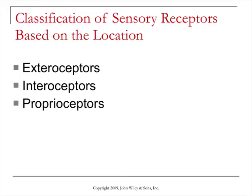Proprioceptors are receptors that are found in the muscles and the tendons, the joints, and also in the inner ear. We'll talk about the inner ear in the next chapter when we discuss the organs of equilibrium and balance. The purpose of proprioceptors is to send information about your body position and muscle length and tension, which helps you make appropriate body movements and maintain your balance.